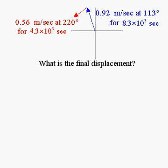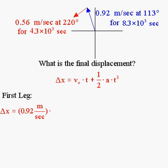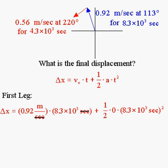Now we're ready to use equation 2.19, applying it to each leg of the journey separately. On the first leg, the velocity is 0.92 meters per second at 113 degrees. We put 0.92 m/s in for V₀, multiply by the time of 8.3 times 10 to the 3rd seconds, and since acceleration is zero, the second term drops out. The distance traveled on the first leg is 7.6 times 10 to the 3rd meters, so the displacement vector is 7.6 × 10³ meters at 113 degrees.